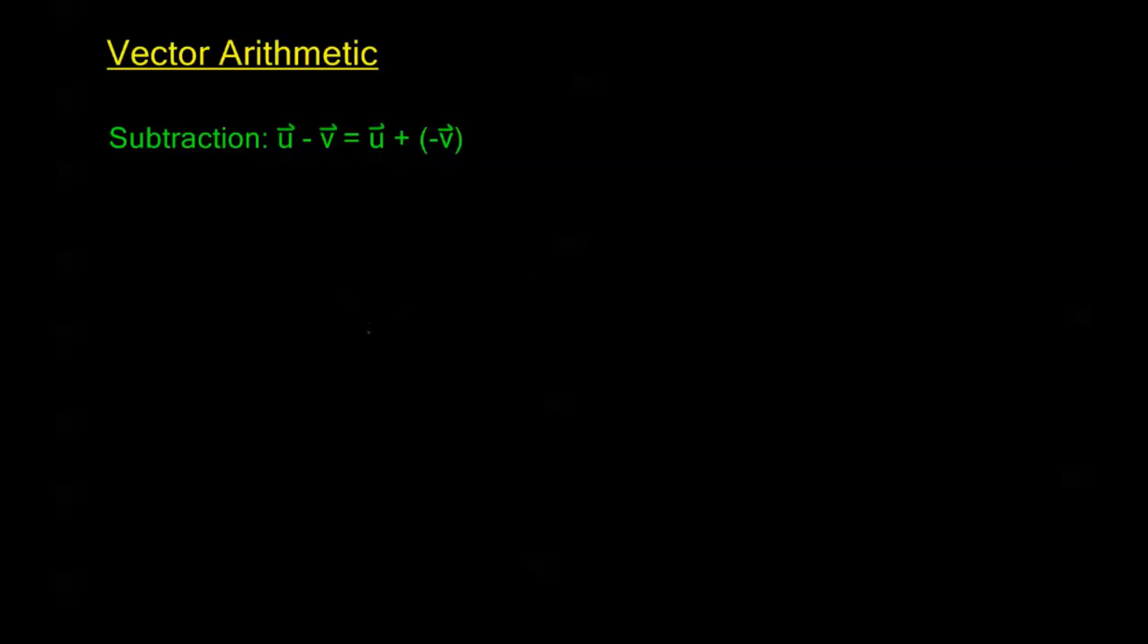So let's say I have this vector u, and I have this vector v. u minus v is going to be this connecting vector from the tip of v to the tip of u, or from the terminal point of v to the terminal point of u, to be a little more precise. This is u minus v.